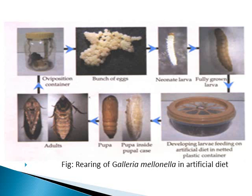This photograph shows the rearing of Galleria mellonella on artificial diet. This is the oviposition container where we keep the adults, and the adults lay a mass of eggs on a black sheet or paper strip. The neonate larvae just hatched from these eggs are shown here. The fully grown mature larvae are very suitable and have good biomass for infection by the nematode. This is the plastic jar where the artificial diet is provided and on which the larvae feed. This is the pupa, where inside the silken cocoon, pupation occurs, after which it develops into the adult stage, continuing the life cycle.